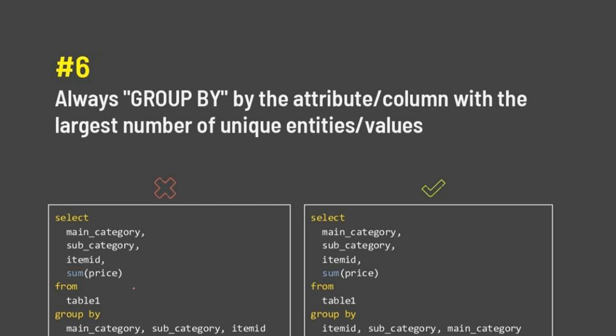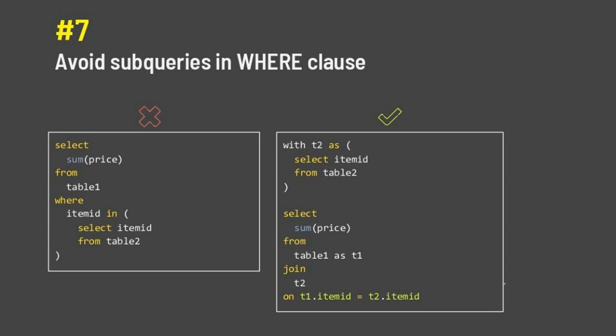Number six is: if you use a GROUP BY clause, the first column should always be the one with the largest number of unique values. For example, item ID has more unique values compared to sub category, which in turn has more than main category. So when grouping, always put the column with the largest unique count first — item ID, followed by sub category, then main category. This is the sixth approach for writing better queries.